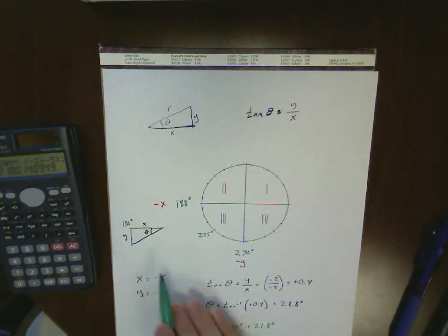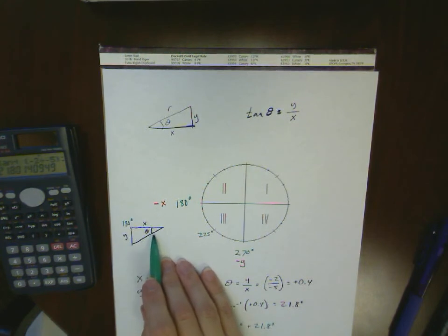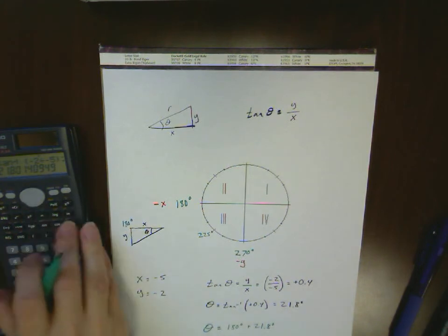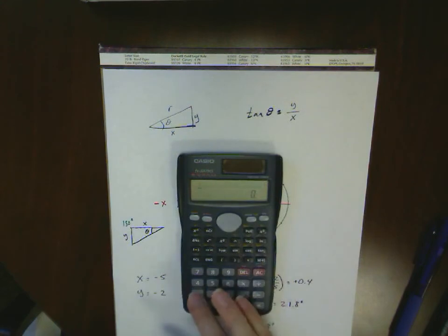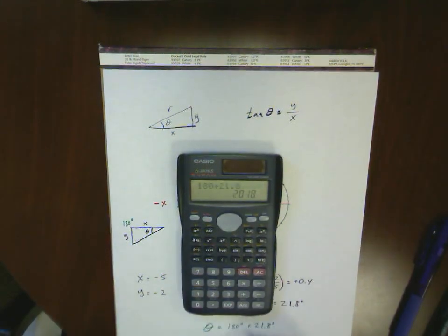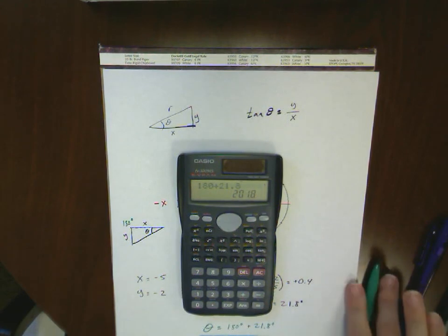Because when the calculator does the inverse tangent, it's working with those two numbers. It's going to give you that angle measured downwards from the 180 degree axis line. And so this is going to give us a total value of 180 degrees plus 21.8 or 201.8 degrees. And that is your final answer if you're in the third quadrant.